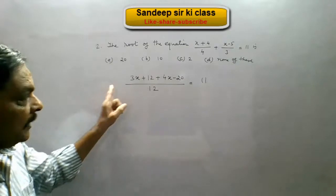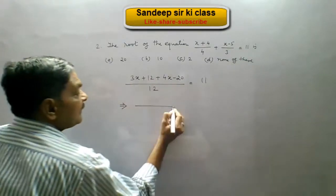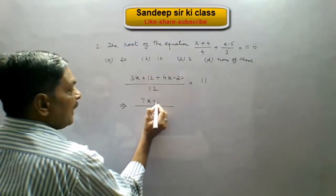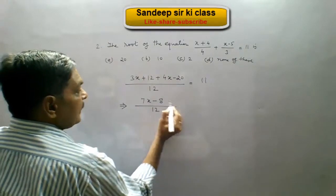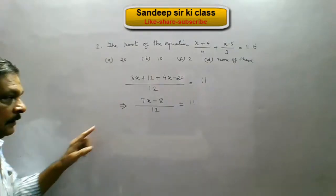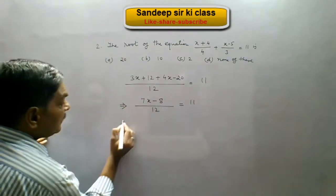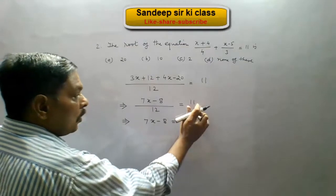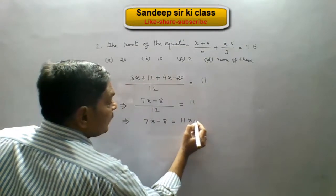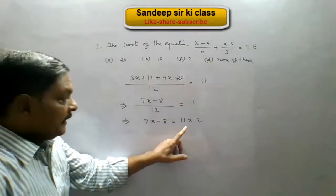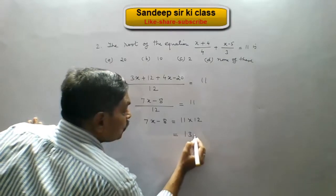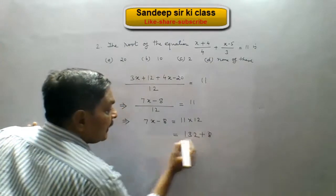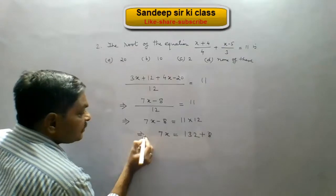This equals 11. Simplifying: 3x plus 4x is 7x, and minus 20 plus 12 is minus 8. So we get 7x minus 8 upon 12 equals 11. In cross multiplication, 12 goes to the right hand side, giving us 11 into 12, which is 132. Then minus 8 is transposed to the right hand side, becoming plus 8, giving us 7x equals 132 plus 8.